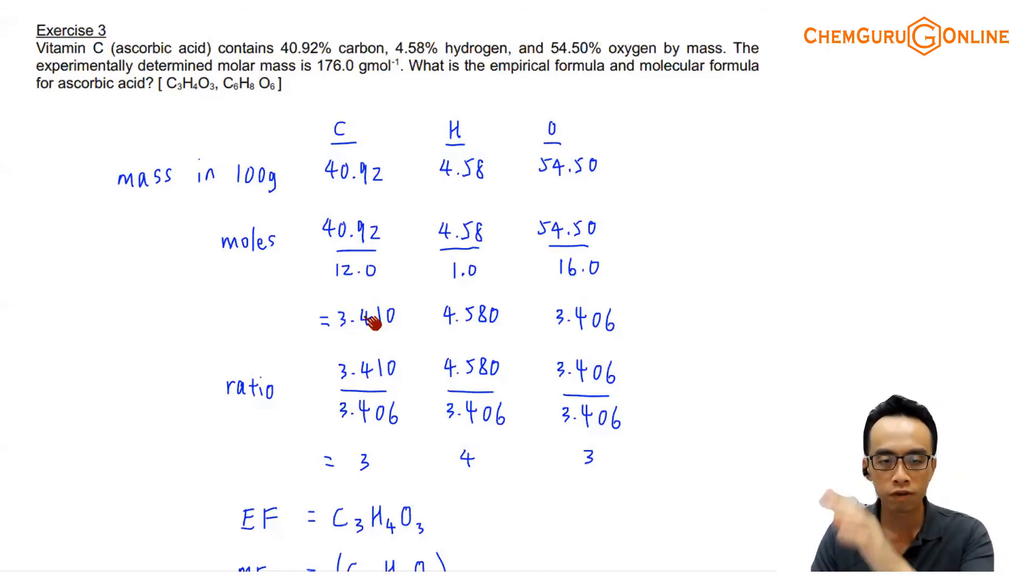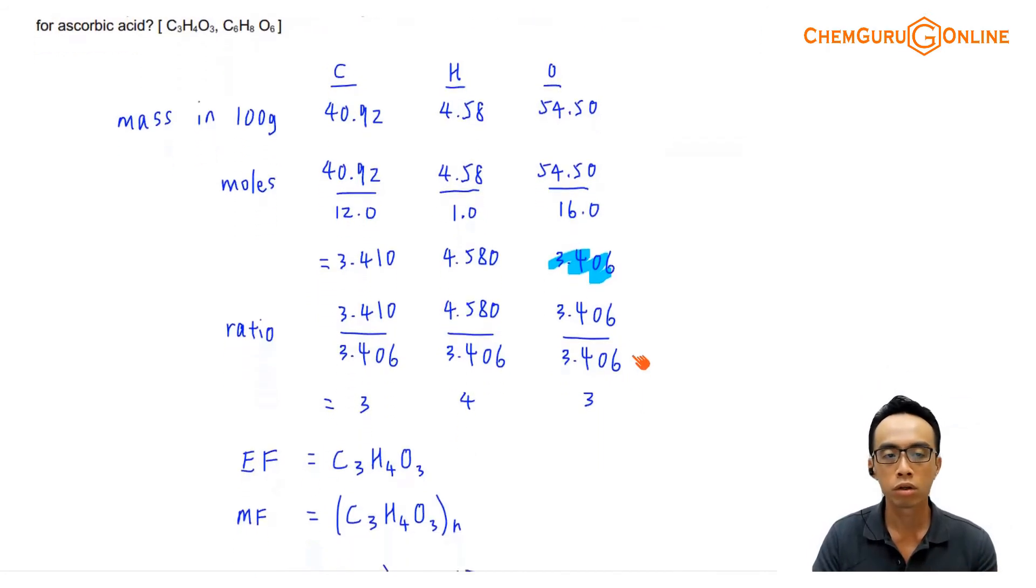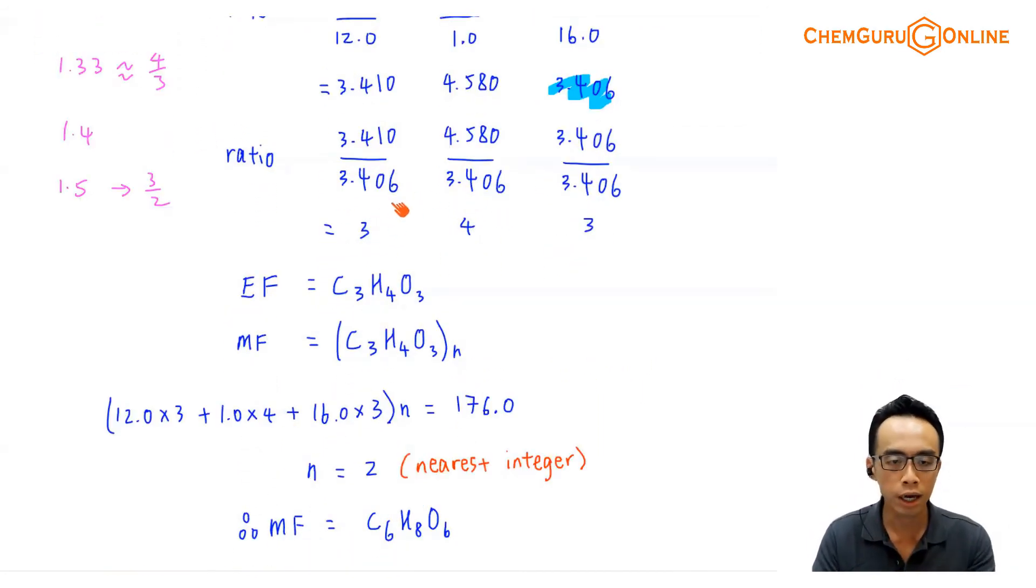So once we have the number of moles of carbon, hydrogen, oxygen, then the next thing we can do is we can divide it by the smallest value. In this case, the smallest number is this guy, 3.406. So everything divided by 3.406. Round this off to the nearest whole number. So the ratio, in this case, back to this guy, 3 is to 4 is to 3. So the empirical formula will be here. C3H4O3. So far, so good.